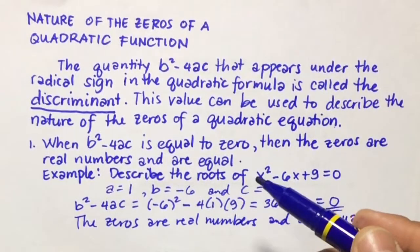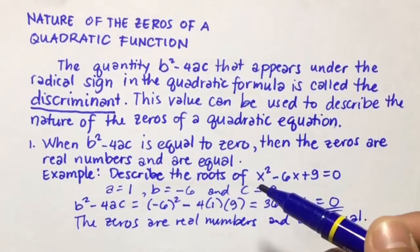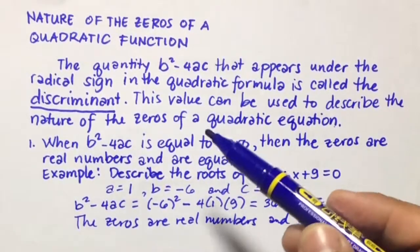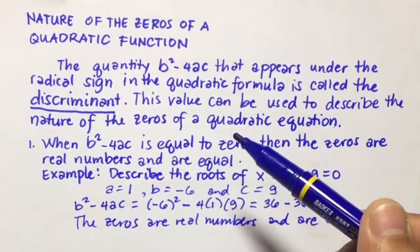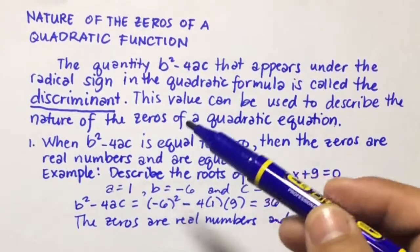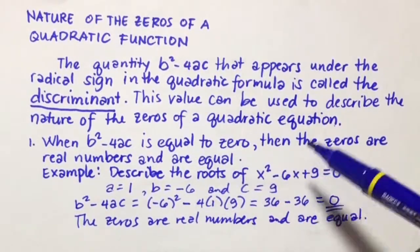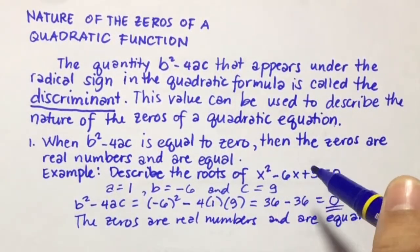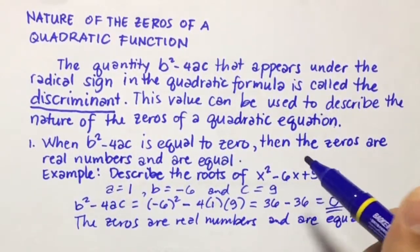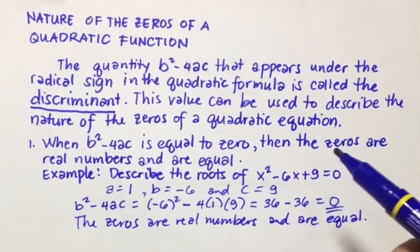You can check that using any method for finding the zeros of x squared minus 6x plus 9 equals 0.